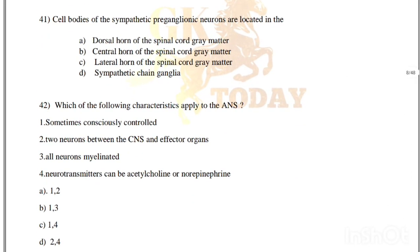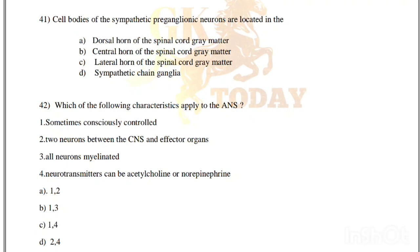Cell bodies of the sympathetic preganglionic neurons are located in the: dorsal horn, central horn, lateral horn of the spinal cord gray matter, or sympathetic chain ganglia. Correct answer is option C, lateral horn of the spinal cord gray matter.